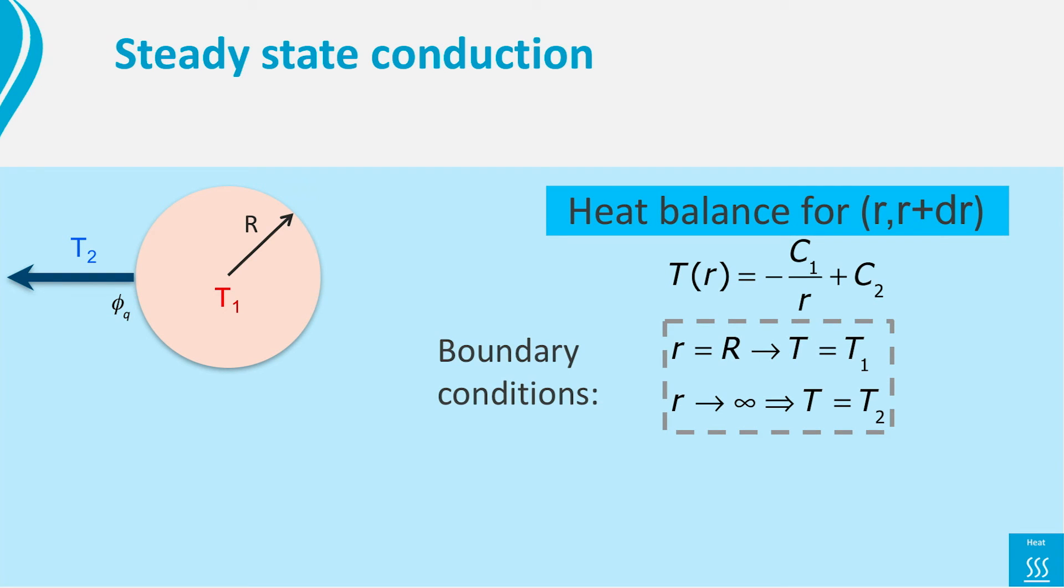At the surface of the sphere the temperature is fixed at T1, and really far away from the sphere the surroundings is at T2. Mathematically, this boundary condition is that as r goes to infinity, the temperature approaches T2.